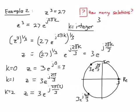If I plug in k equal to three, I would get three e to the j two pi, which is just three again — we've come all the way back around. So we were expecting three unique solutions, and we've got our three unique solutions, plotted in the complex plane.